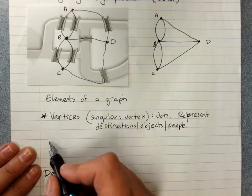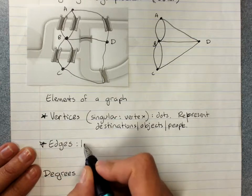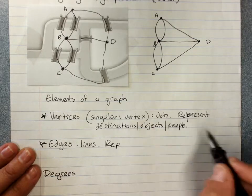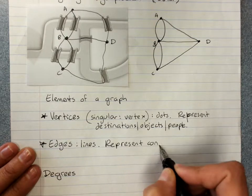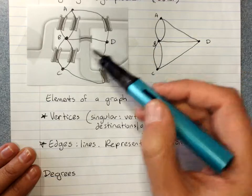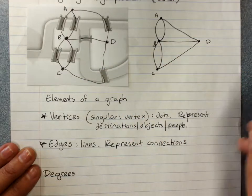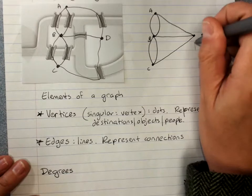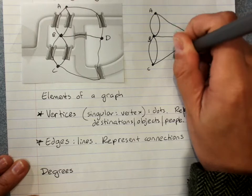The edges are the lines. And these represent the connections between the destinations or the objects or the people. So here our vertices represent destinations or places. And the lines represent bridges or paths to get to them. So even though I suspect you don't need me to label this, we have D here is a vertex. And this is an edge.